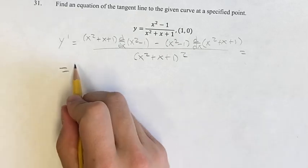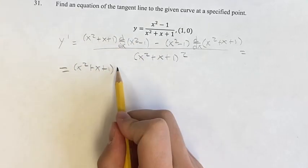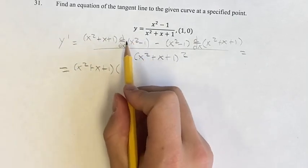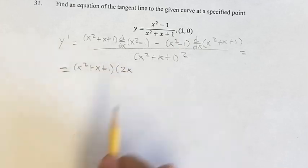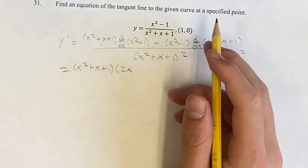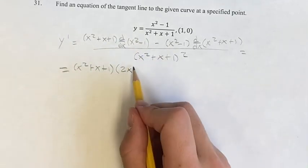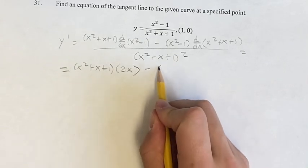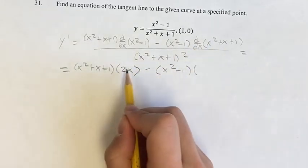And this is x squared plus x plus 1. The derivative of x squared, power function, bring down the exponent. New exponent is the old one minus 1, so 2 minus 1 is x to the first power. x to the first power is just x. Then we have minus the derivative of 1 is just 0, so minus 0. Don't even have to write it. Minus x squared minus 1 times the derivative of x squared.